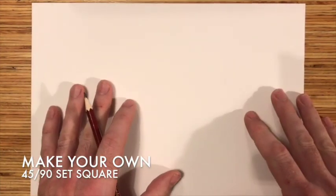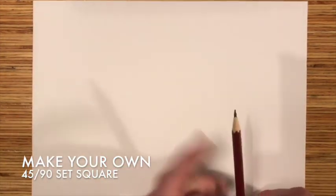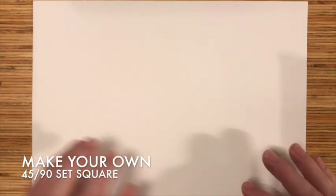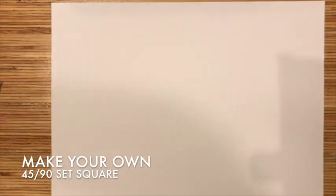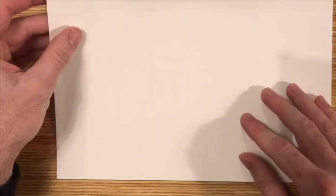Okay, so in this tutorial I'm going to show you how to make a 45-90 set square for use when you're drawing in oblique. Very easy. What we need to do is create a 45-degree angle.